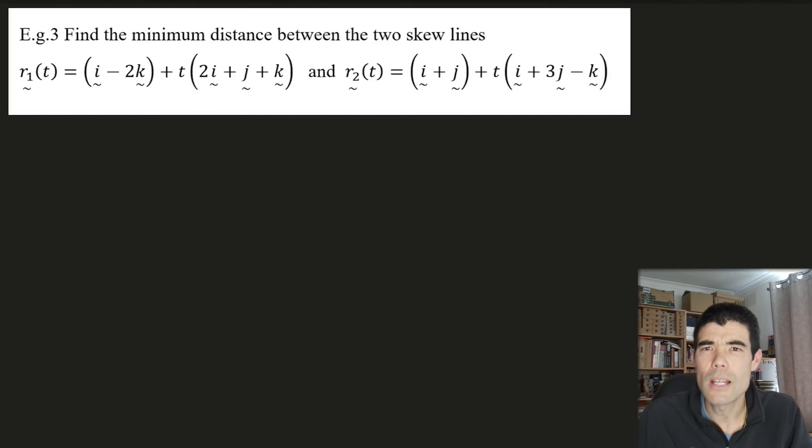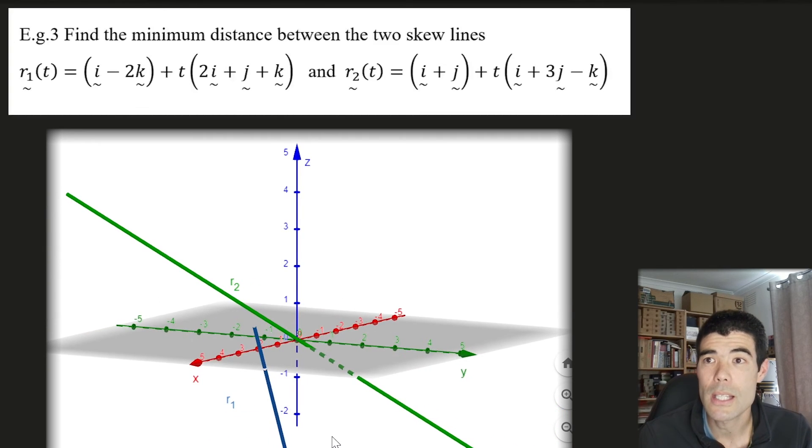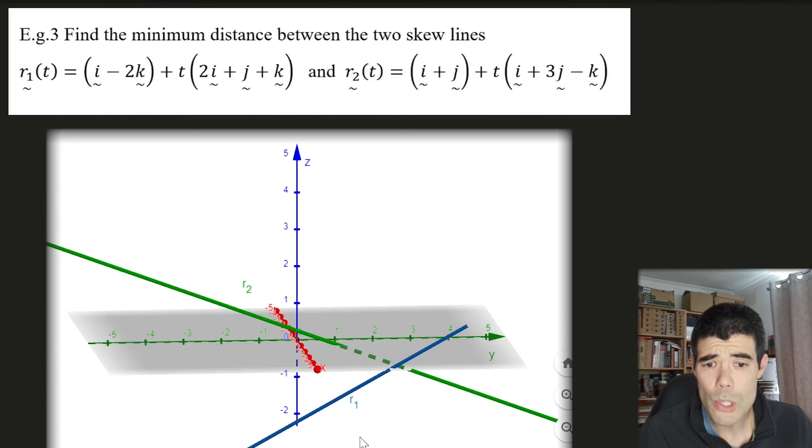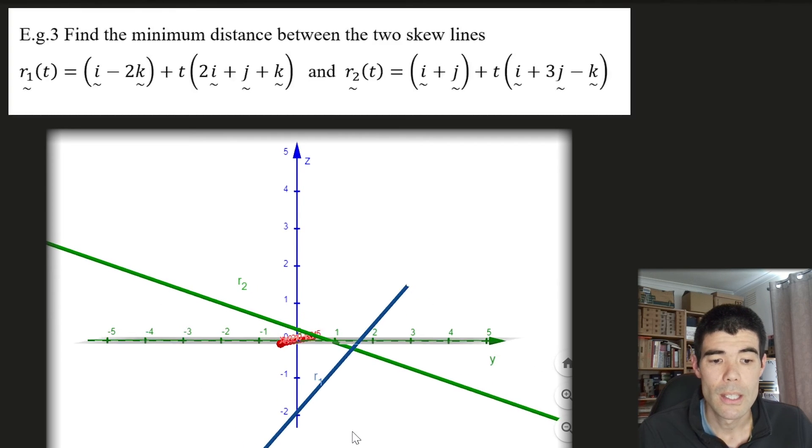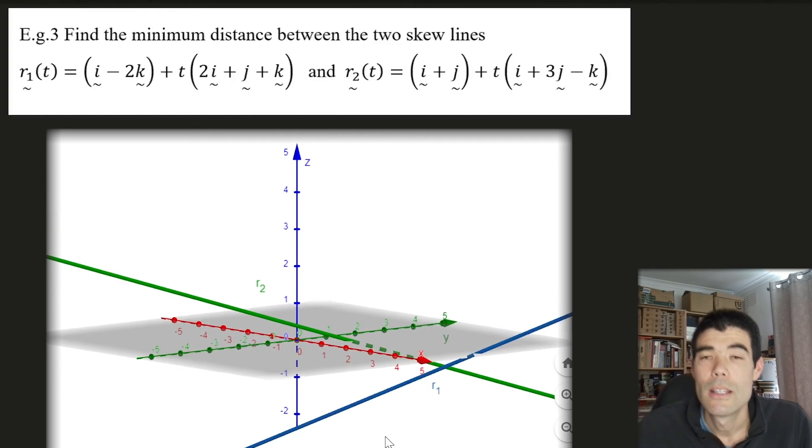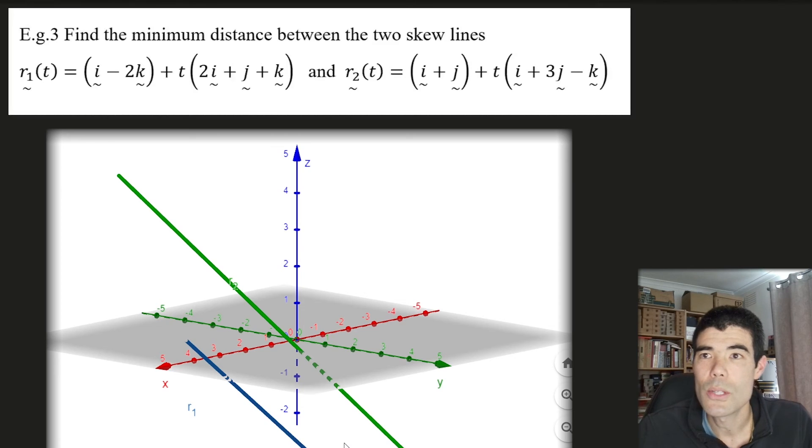Alright, next example, which is similar, slightly more complicated, is the distance between two skew lines. So skew lines are two lines in 3D space that do not intersect, but are also not parallel. These two lines, which are defined in vector form here, it's maybe not that obvious that they don't intersect, but if we represent a diagram on Geogebra and just move it around a bit, we can probably see that they don't. And what we're going to do is, again, use a vector projection method. They're not in the same plane, but there is a plane that is parallel to both of these lines.